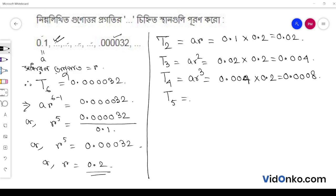T5 equals ar to the 4th power. This is 0.0008 into 0.2, which equals 0.00016.